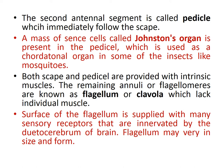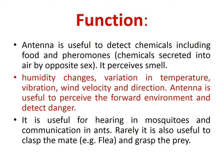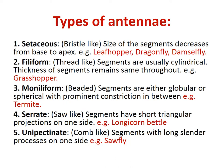The surface of the flagellum is supplied with many sensory receptors that are innervated by the deutocerebrum of the brain. The flagellum may vary in size and form. The antennae is useful to detect chemicals including food and pheromones — pheromones are chemicals secreted by the opposite sex. It perceives smell and the surroundings, humidity changes, variation in temperature, vibration, and wind velocity and direction. Antennae is useful to perceive the forward environment and detect danger. It is useful for hearing in mosquitoes and communication in ants. Rarely, it is useful to clasp the mate in fleas and grasp the prey.